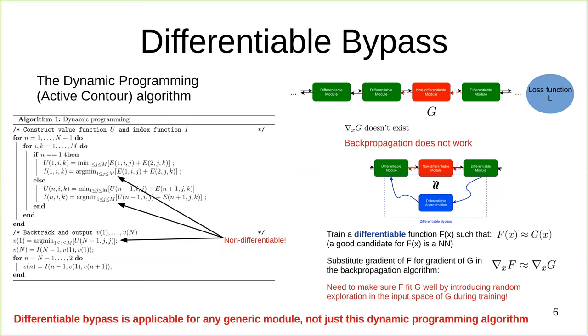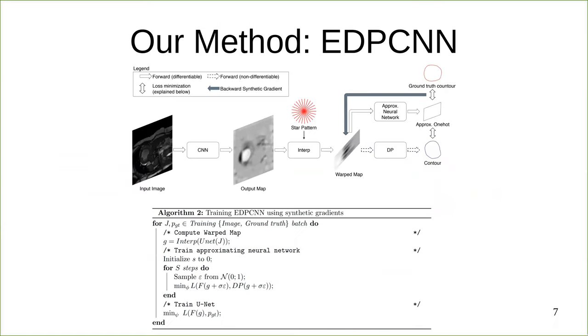This slide shows the model and the final training algorithm. There are two loops in the training algorithm. The inner loop is used to train the differentiable bypass, while the outer loop is used to train the combination model end-to-end.